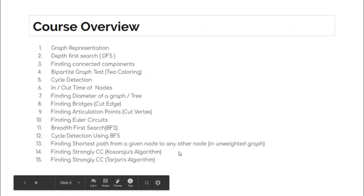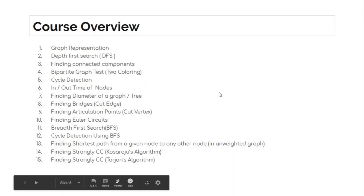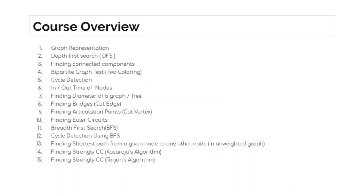After this, we would study strongly connected components. There are two different algorithms to find strongly connected components: Kosaraju's algorithm and Tarjan's algorithm. We would study both of them separately, and this concludes Part 1 of the graph theory course.